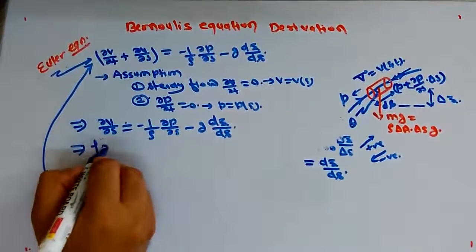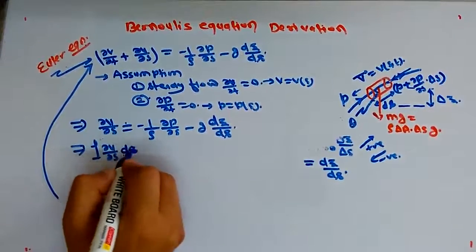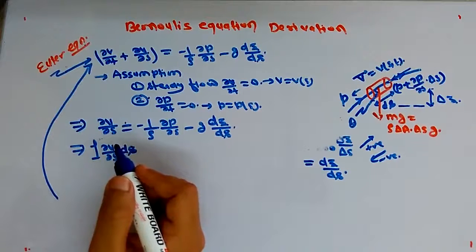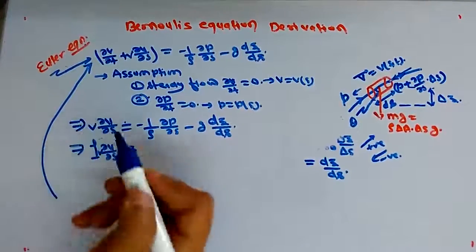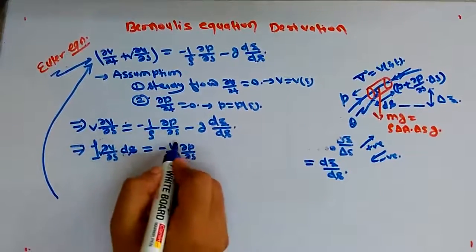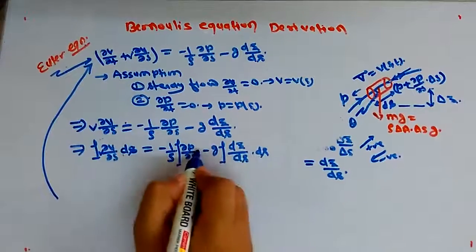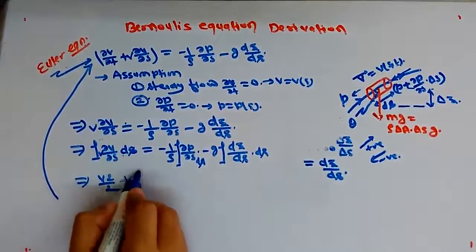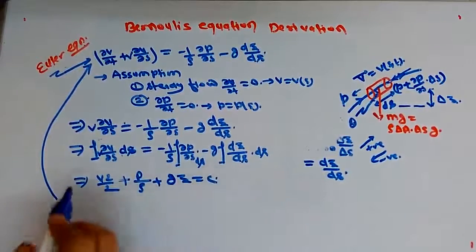Integrating both sides with respect to s, we obtain: V²/2 + p/rho + g*z = constant. This is the Bernoulli equation, where V²/2 is kinetic energy per unit mass, p/rho is pressure energy per unit mass, and g*z is potential energy per unit mass.